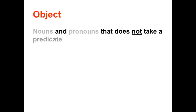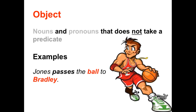Objects are nouns and pronouns that do not take predicates. So any noun or personal pronoun in the sentence that is not taking an action is an object. Here are some examples. 'Jones passes the ball to Bradley.' In this sentence, the predicate is 'passes.' So we ask ourselves, who or what passes? The answer is Jones. Jones is the subject of this sentence since he takes the predicate 'passes.' But we have two other nouns — ball and Bradley — and these nouns do nothing in this sentence. They do not take actions. Therefore, they are objects.